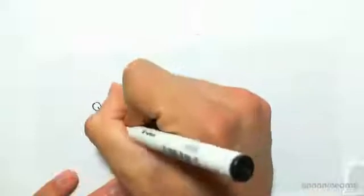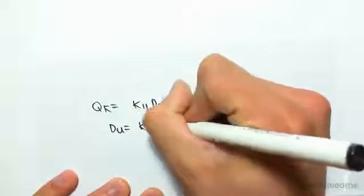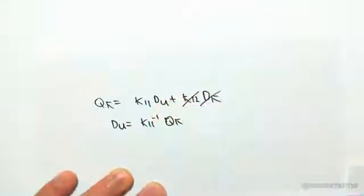If we wanted to solve for D unknown, we would need to find K11 inverse Q known.